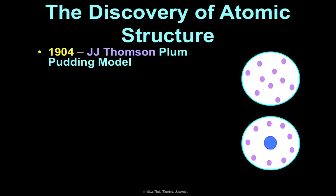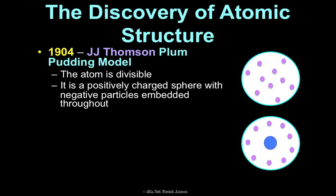In 1904, J.J. Thomson came up with the plum pudding model, named after a popular dessert at the time — basically a pudding with chunks of plum in it. If he had discovered this in 2017, it would probably be J.J. Thomson's chocolate chip cookie model, because it's the same idea. He was the first to say the atom is actually divisible. It's a positively charged sphere with negative pieces embedded throughout — like chunks of negative plum in positive pudding, or negative chocolate chips in a positive cookie.